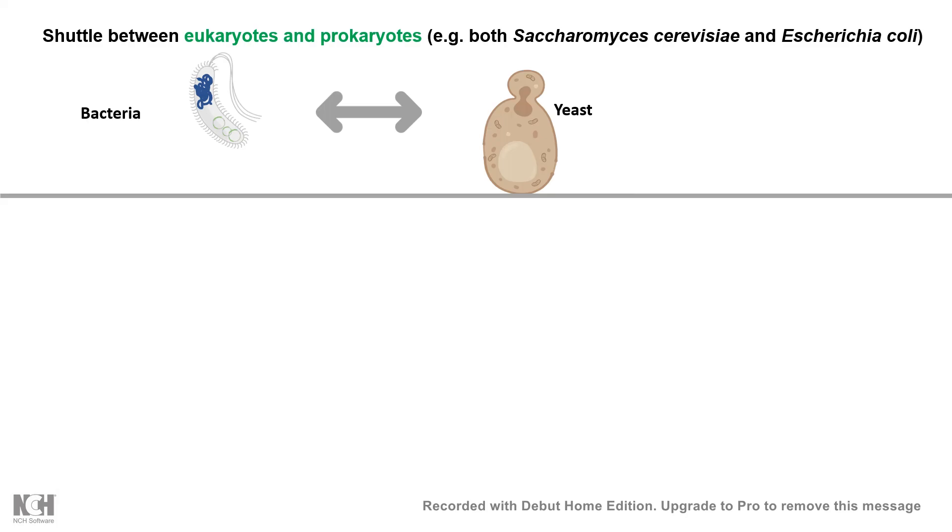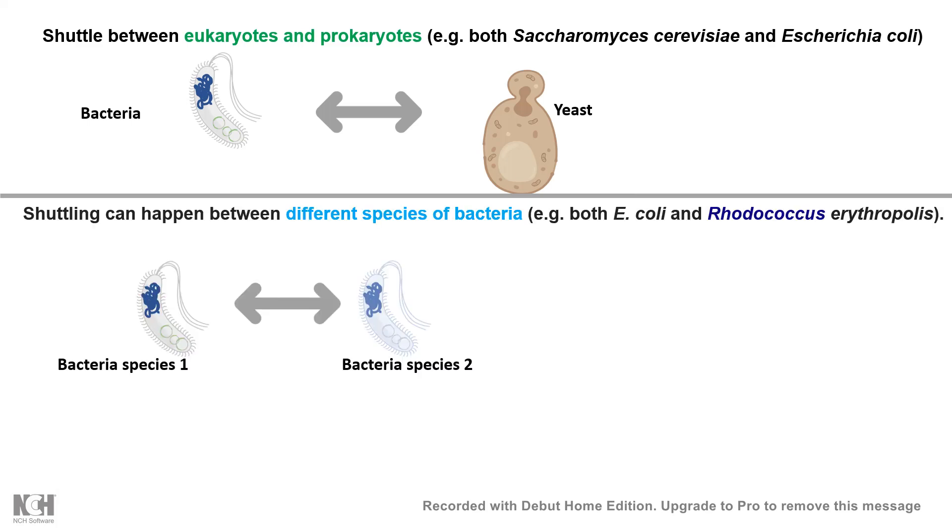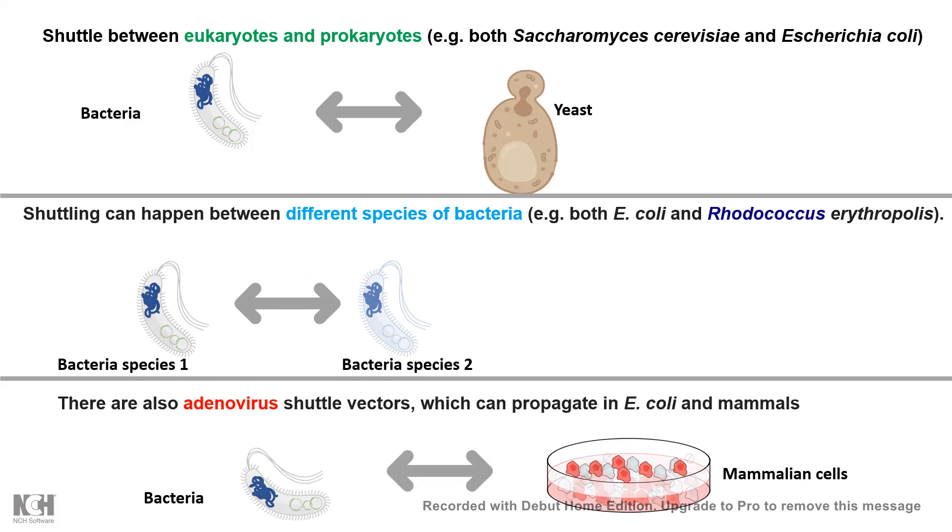But you'd be surprised to hear that not only in bacteria or yeast, these shuttle vectors can be used to segregate plasmids from two different strains of bacteria. Let's say one gram positive and one gram negative bacteria. Or even there are some adenovirus-based shuttle vectors which are used to propagate plasmids between E. coli and mammalian cells.